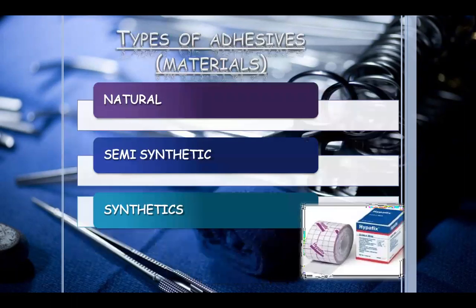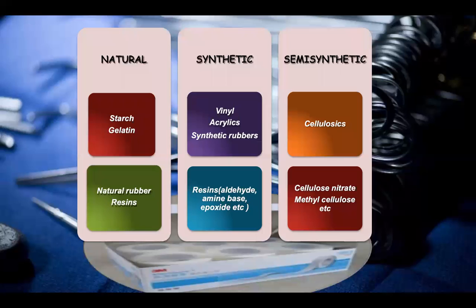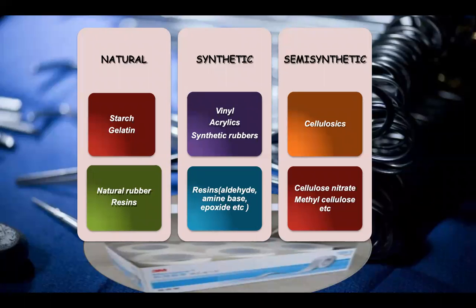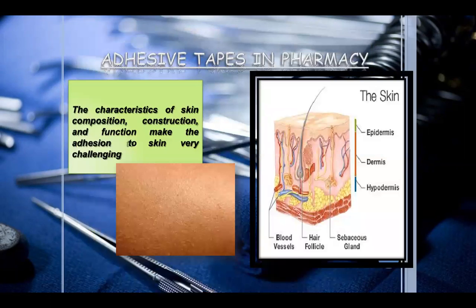Types of adhesives include natural, semi-synthetic, and synthetic. Natural materials include starch, gelatin, natural rubber, and resins. Synthetic materials include vinyl, acrylics, synthetic rubbers, resins, aldehyde, amine base, and epoxide. Semi-synthetic materials include cellulose, cellulose nitrate, and methylcellulose — a combination of both natural and synthetic components.